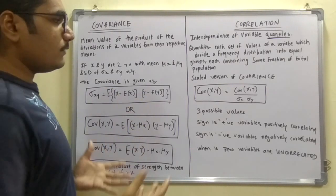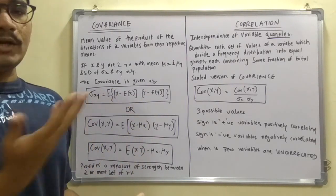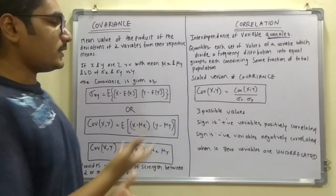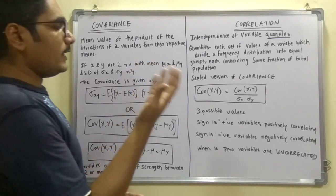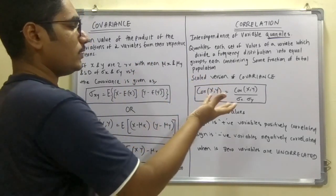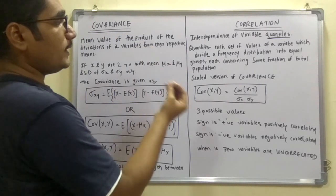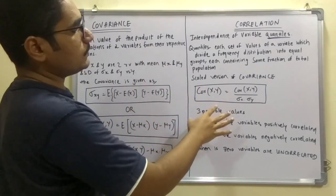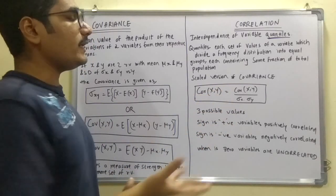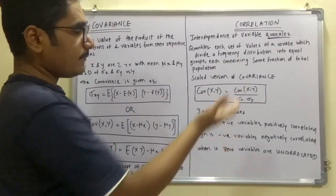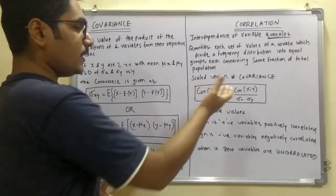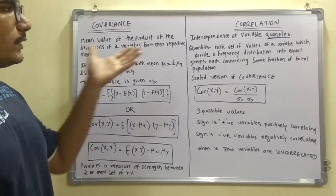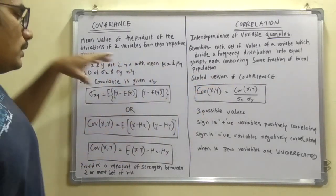A more scaled version of covariance is called correlation. If we have two random variables X and Y with standard deviations sigma_X and sigma_Y, then the correlation is: COR(X, Y) = COV(X, Y) divided by sigma_X times sigma_Y. To calculate correlation, you first need to solve for the covariance.